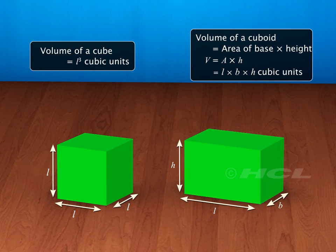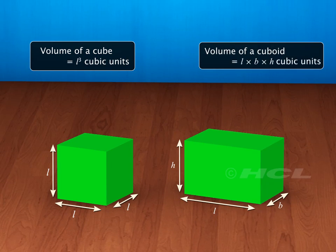So we conclude that since all three sides of a cube are the same, its volume is actually the cube of the length of its side, whereas in the case of a cuboid, volume is the product of its length, breadth, and height.